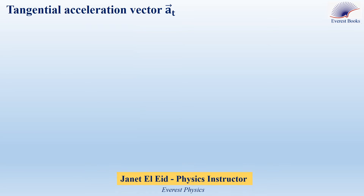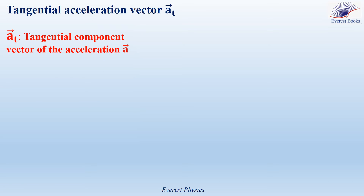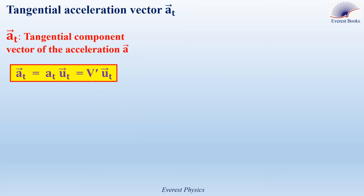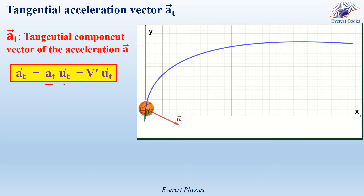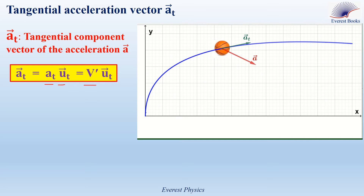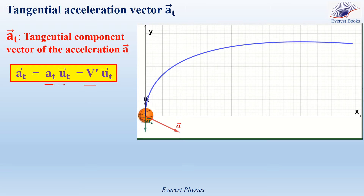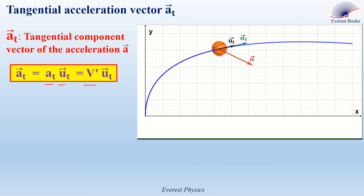In the previous video, we explained the x and y components of the acceleration vector. Now we are going to explain the tangential and the normal components of the acceleration. Let's start with the tangential component vector of the acceleration. A_T equals a_T times u_T, which is equal to v' times u_T. Consider a particle moving on a curved path. The green vector is the tangential component vector of the acceleration — it is tangential to the trajectory at any instant. u_T is a unit vector in the tangential direction of the trajectory, and it is in the direction of motion at any instant.